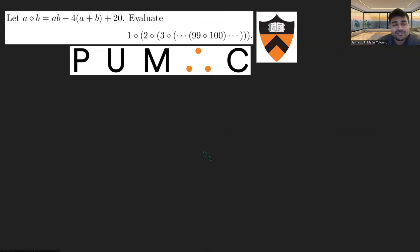Today we've got a problem from Princeton University's maths competition. We have A diamond B equals AB minus 4 times (A plus B) plus 20.